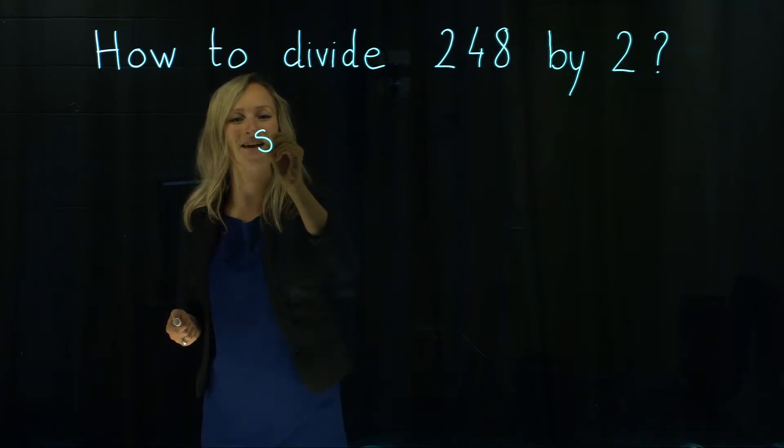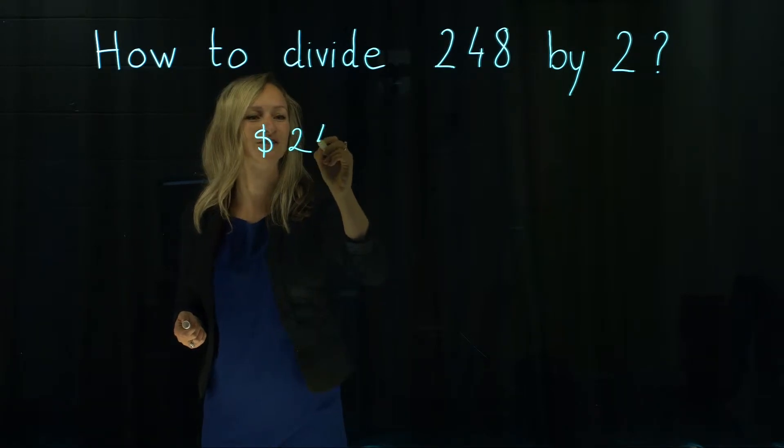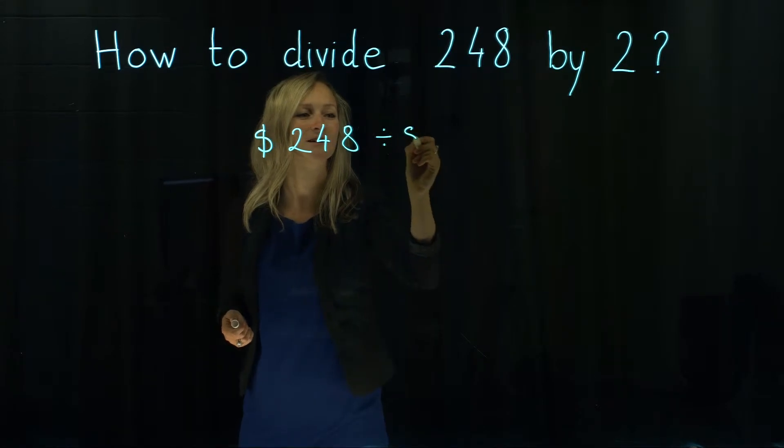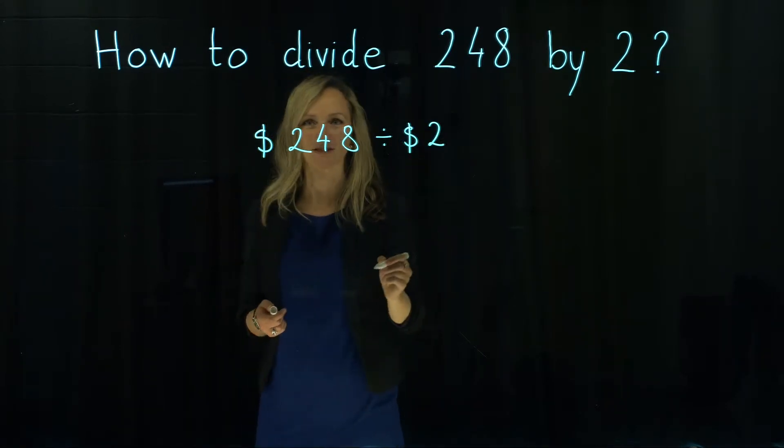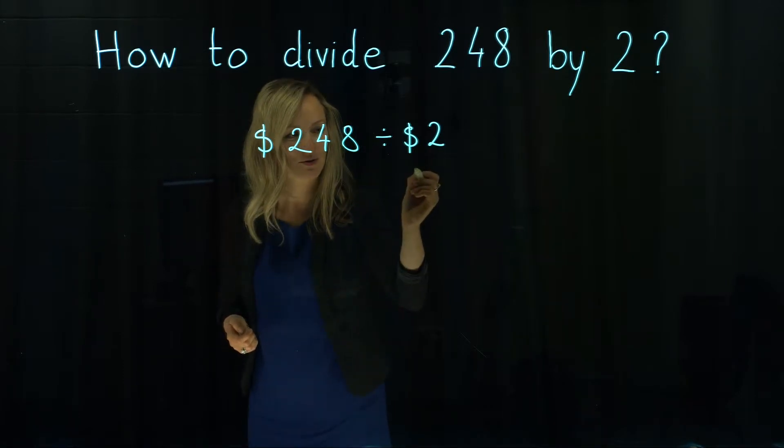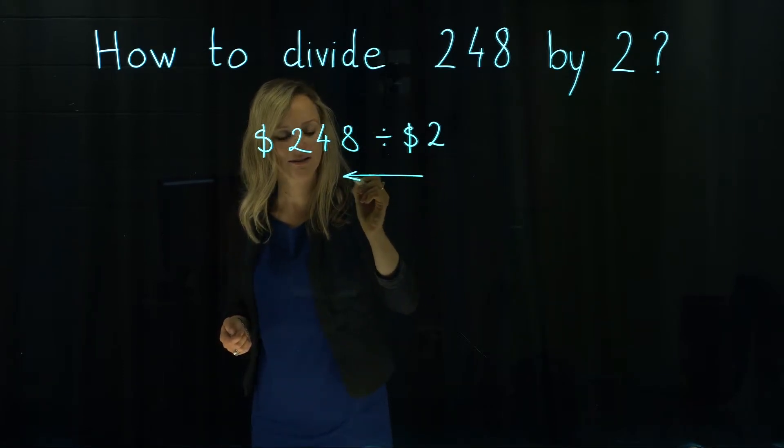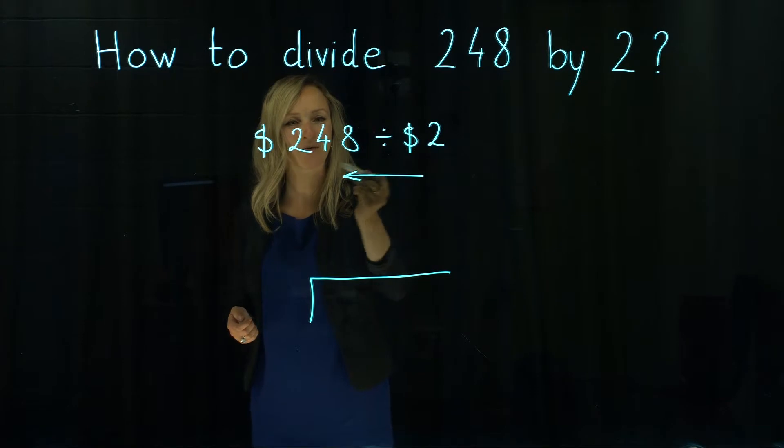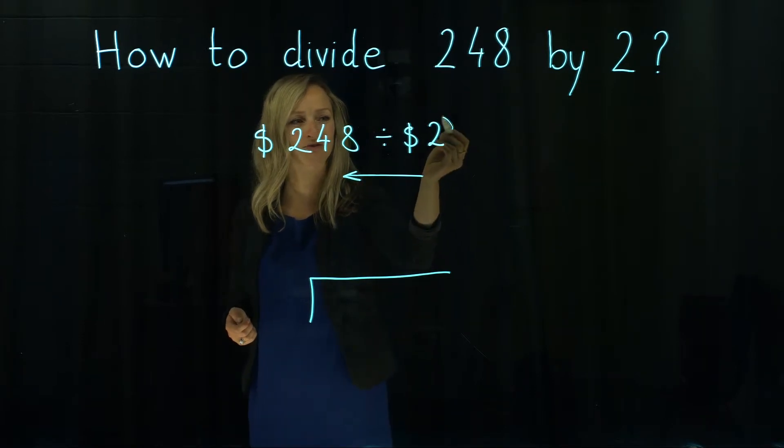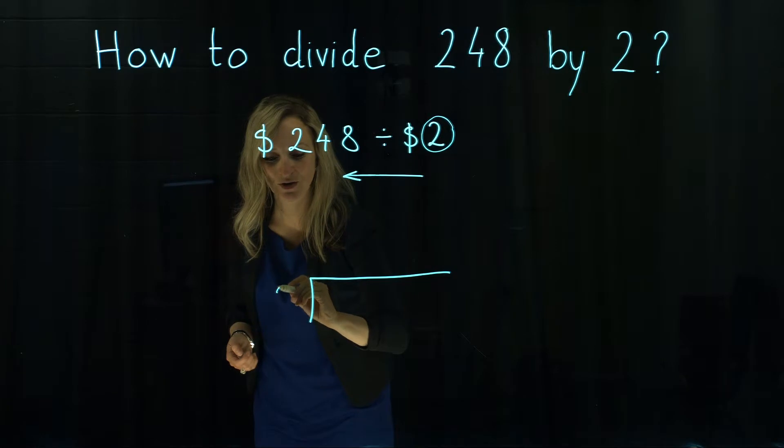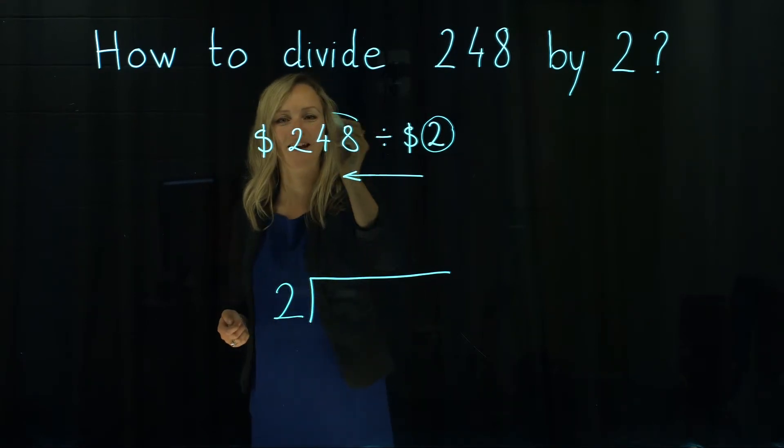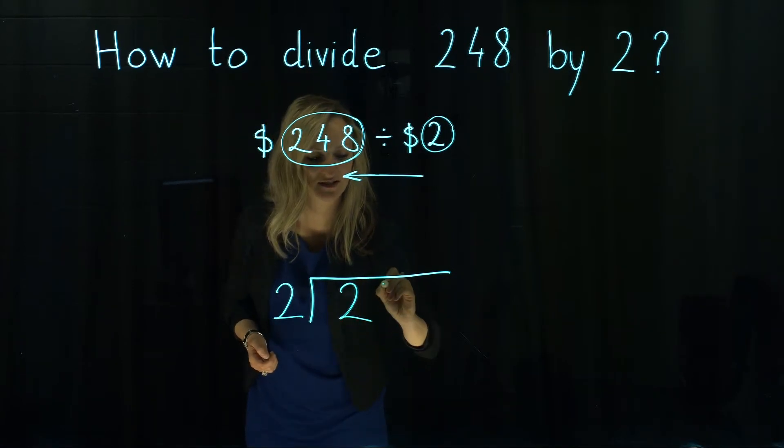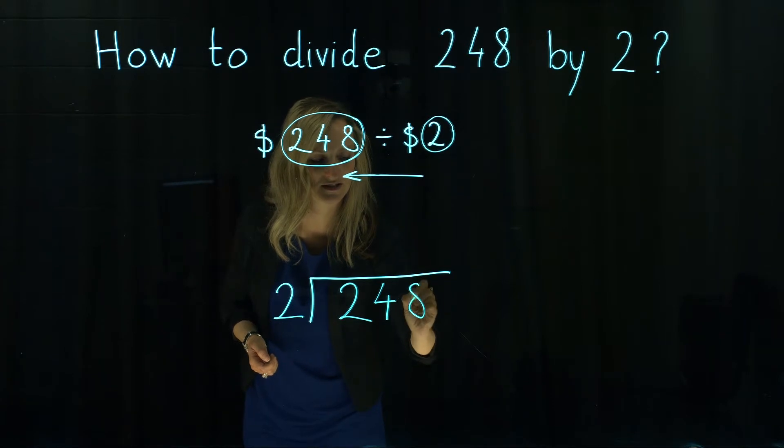So let's say $248 we are dividing by $2. Then we actually put those two numbers in division stage, and it goes the other way around. So firstly we're going to write a number 2. So 2 goes out of division stage and then after that we're going to write $248.